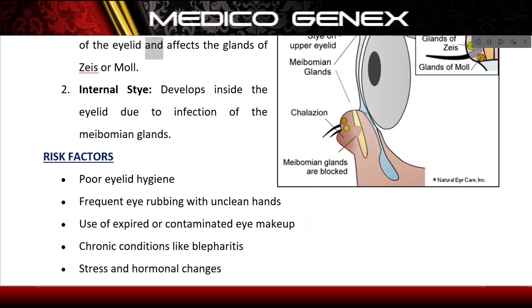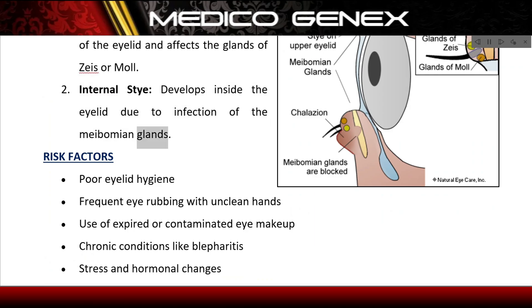There are two types of stye. An external stye forms on the outer edge of the eyelid and affects the glands of Zeis or Moll. An internal stye develops inside the eyelid due to infection of the meibomian glands.